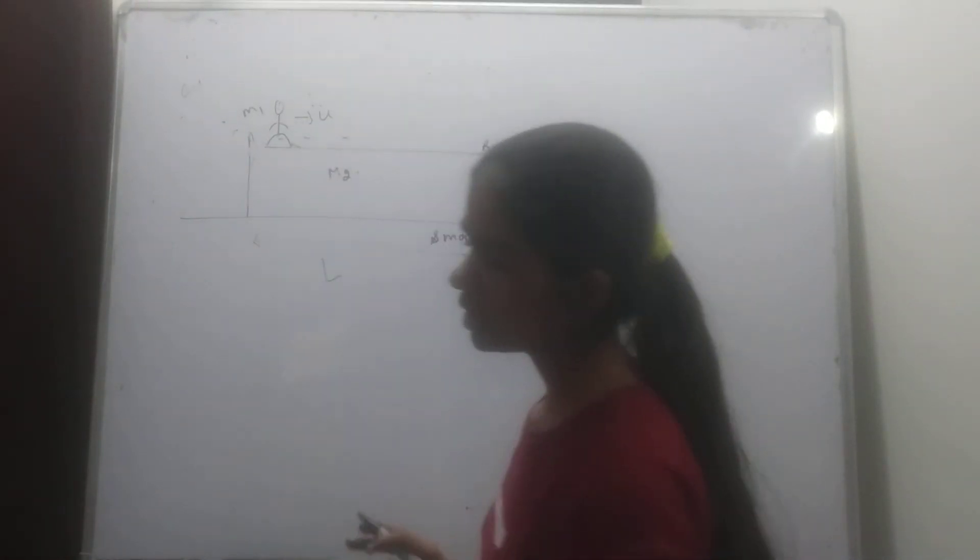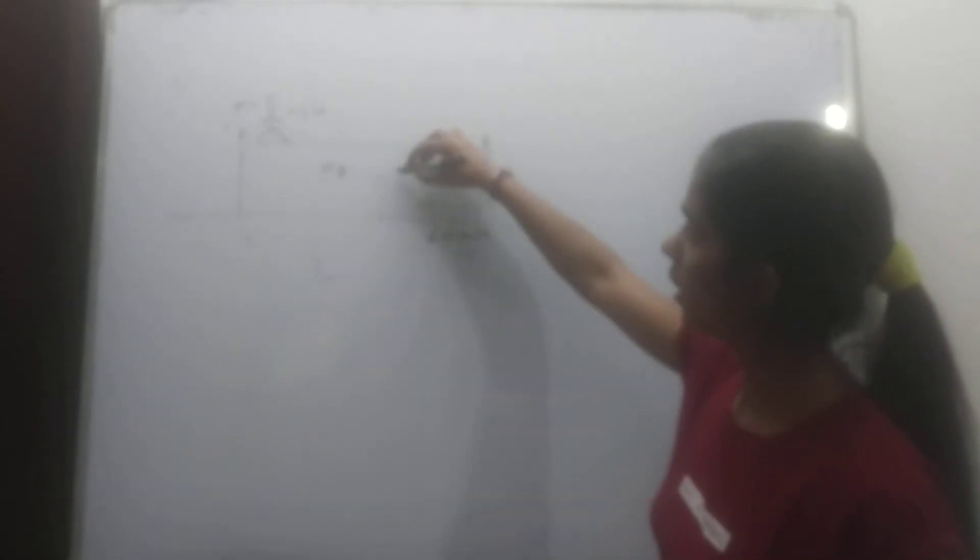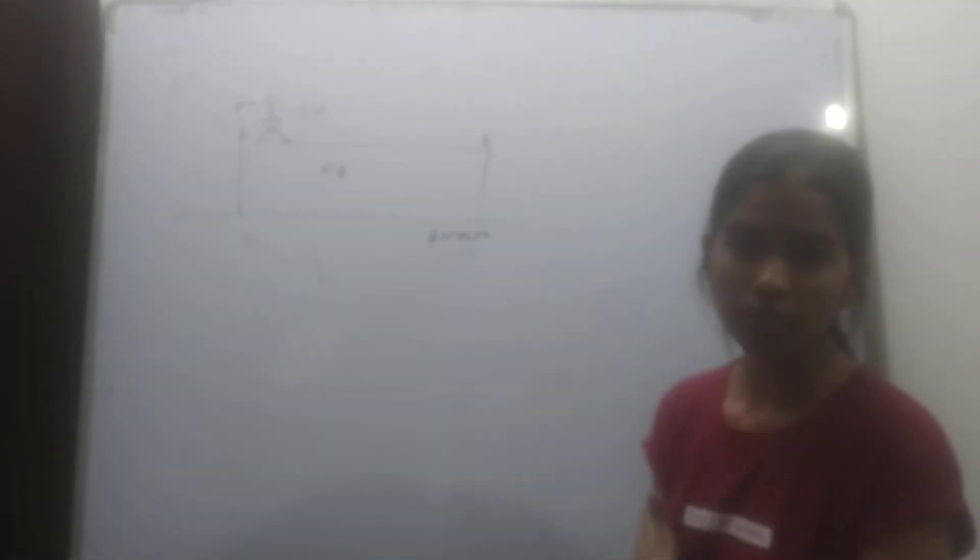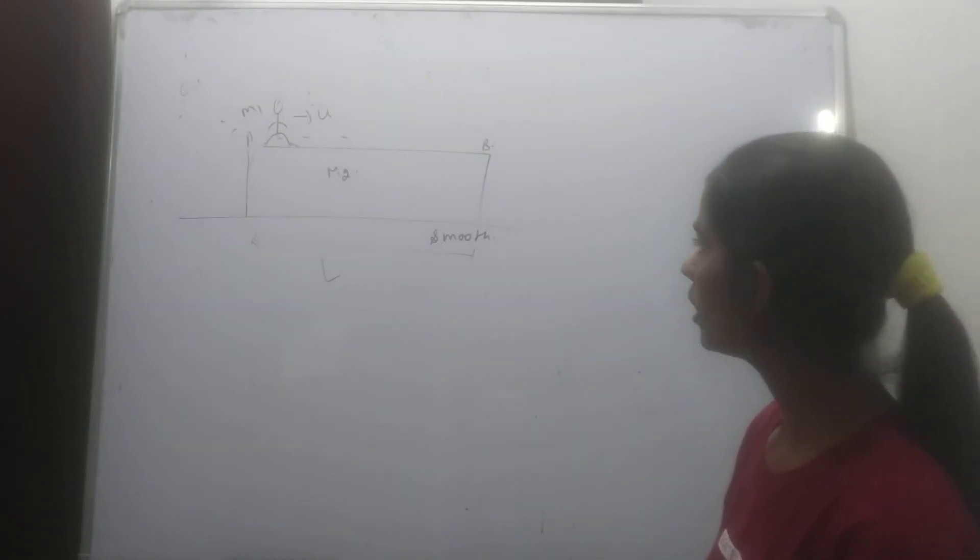Velocity of plank - let's see what happens in the figure. The ground and plank surface is smooth, but there is friction between man and plank. The man runs from A to B with velocity U. So how do we find the velocity of the plank?